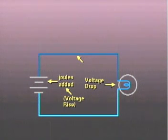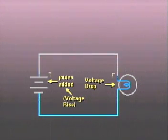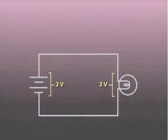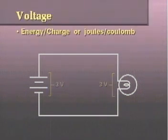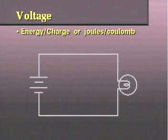Both kinds of energy, the energy introduced into the circuit by the voltage rise and the energy removed from the circuit by the voltage drop, are expressed in volts. As we said in our last lesson, voltage equals energy per charge, or joules per coulomb.